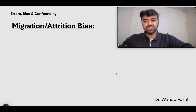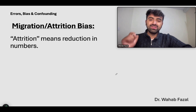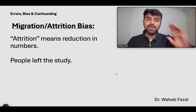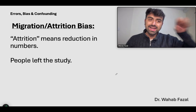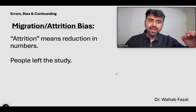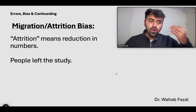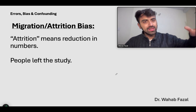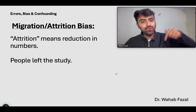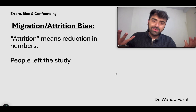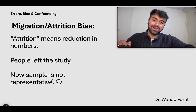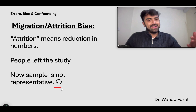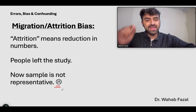Let's talk about attrition bias, also called migration bias. The word attrition means reduction in numbers — meaning people left the study. Selection bias does not necessarily just occur when you're selecting people. Your sample was great, but suddenly people left. For example, your sample was all the apples in your city, and suddenly you've lost all the red apples. If you want to make a conclusion about all kinds of apples, your sample does not have any red apples. You lost people in the study and now the sample is not representative. That is migration or attrition bias.